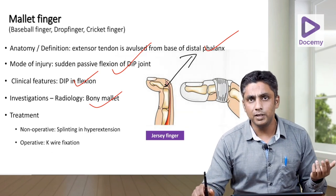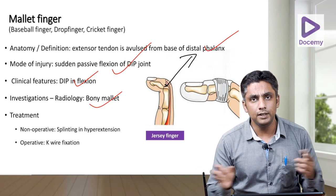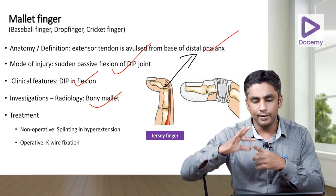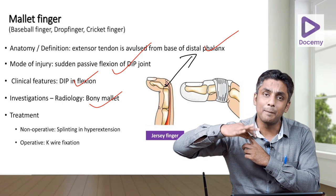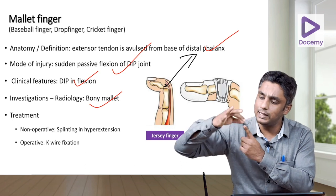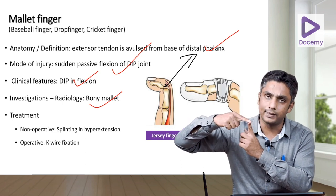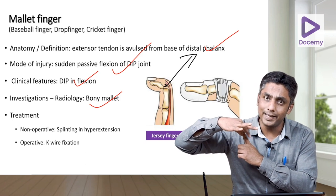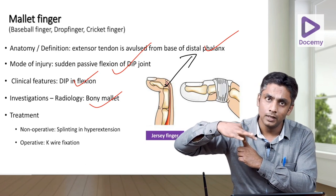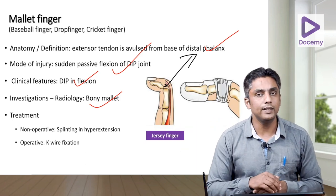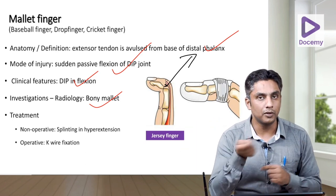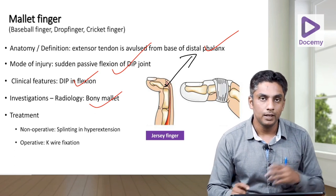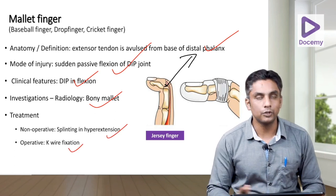Management: if it is bony and the tendon is not displaced too much, you can have an extensor splint — the mallet splint — with the DIP joint in hyperextension. In case the tendon alone is ruptured, you may have to go for pullout stitches. So that is the mallet finger.